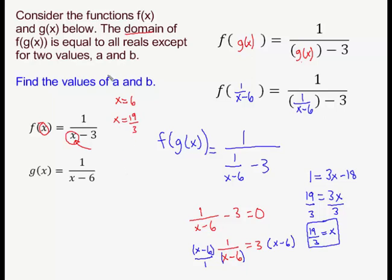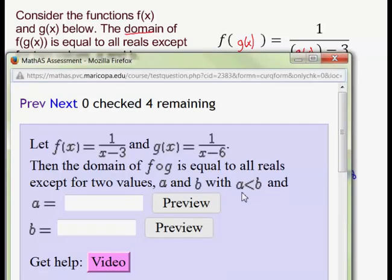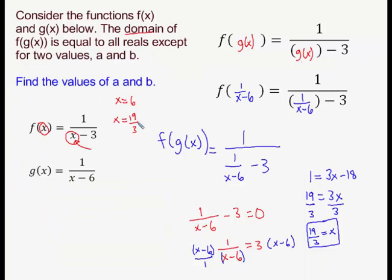Now they wanted us to call these two x values A and B. If you're doing this problem in MathAS, the way the current problem is written is that they want to define A to be the smaller of the two values. They say this by saying A is less than B. So not that you need to change your answer 19 thirds, but you at least have to figure out whether 19 thirds is smaller than 6 or bigger than 6. And since 3 goes into 19 6 times, in fact 3 times 6 is 18, you'd have 1 left over.